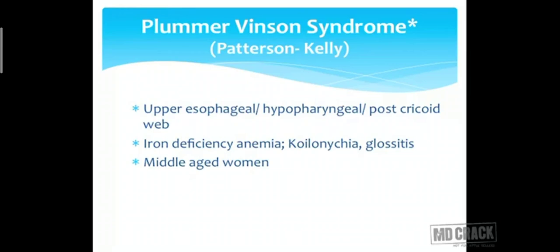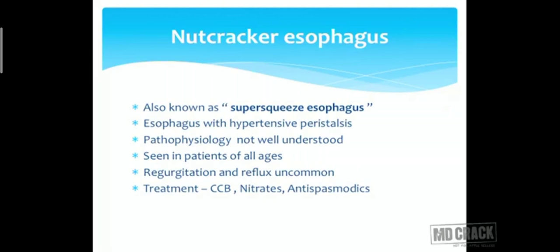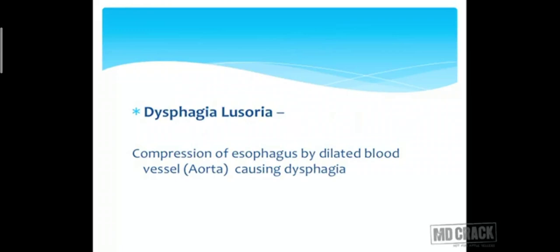Nutcracker esophagus, or hypertensive peristalsis, is a super-squeeze esophagus with markedly raised pressure. The pathophysiology is not well understood and it can affect patients of all ages; common symptoms are reflux and regurgitation. Treatment involves relaxation with calcium channel blockers, nitrates, and antispasmodics. Dysphagia lusoria is another important term, where a dilated aorta compresses the esophagus, causing dysphagia.